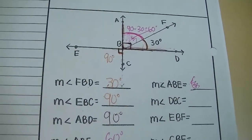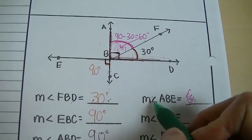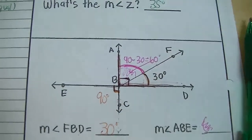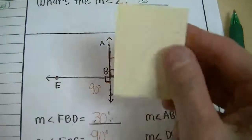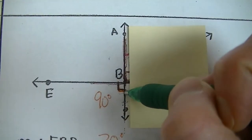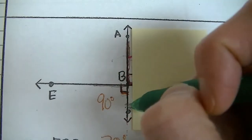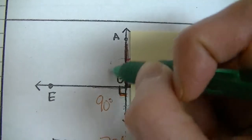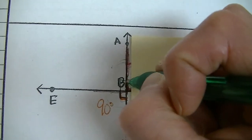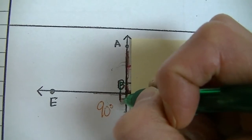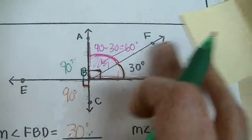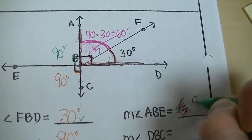Next, find the measurement of angle ABE. Looking at this, we can see that the angle on one side is 90 degrees. When you join their arcs, these angles form a half circle — so by the definition of supplementary angles, this must also be 90 degrees, because 90 + 90 = 180. So angle ABE is also 90 degrees.